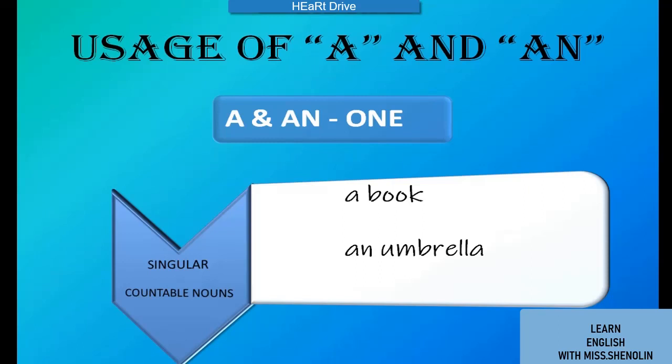We have to use 'a' and 'an' before singular countable nouns. A countable noun is a noun which can be counted. For example: a book, an umbrella.